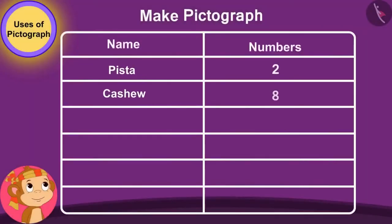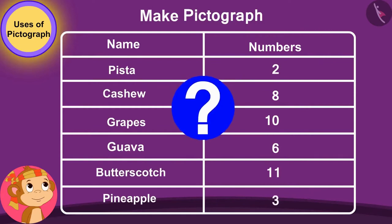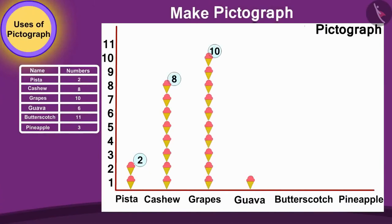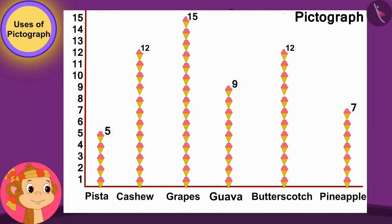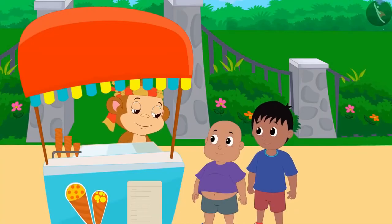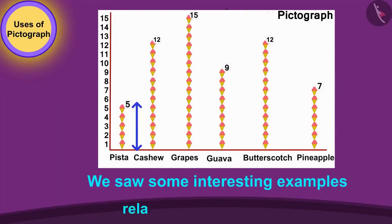Children, if Babban would have recorded these numbers in a table, can you make a pictograph showing the information? You can make this together with your friends. Well done — you have created this pictograph perfectly. Babban decided with the help of the pictograph that he will also start selling grape ice cream from the next day. Babban sold grape ice cream at his stall the next day and everyone liked it very much. In this video we saw some interesting examples related to the pictograph.